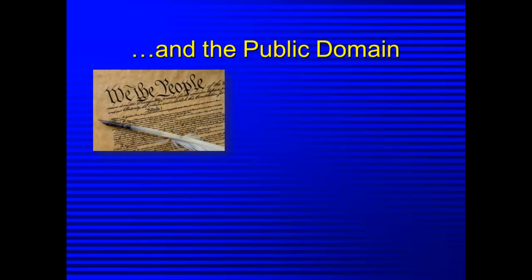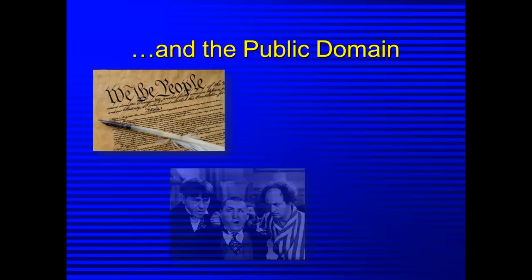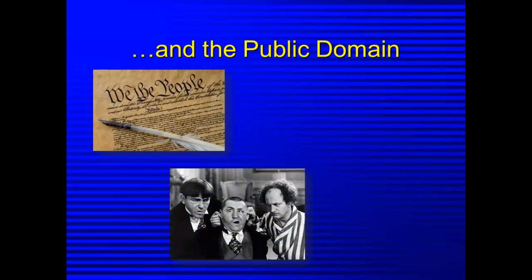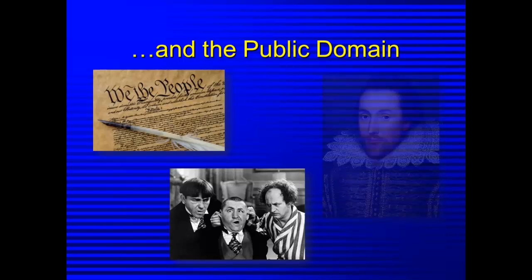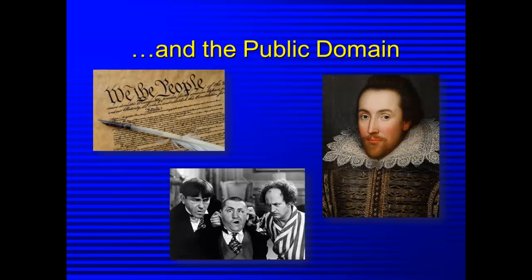Works that are in the public domain are not protected by copyright. Examples of public domain sources include U.S. government documents such as the Constitution, works on which the copyright has expired like some episodes of the Three Stooges, and works created and first published before 1923, such as the plays of William Shakespeare. These works may be used or modified by anyone without permission of the authors, but must still be cited.